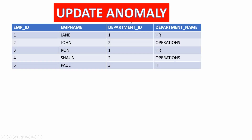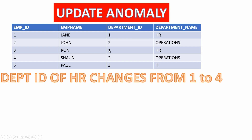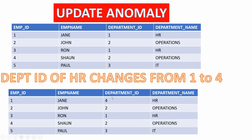Let's talk about update anomaly. Jane and Ron share the same department ID 1 and work in the HR department. For some reason the department ID of HR department is updated from 1 to 4. The update happens successfully for Jane but not for Ron. Now we cannot clearly identify if HR has department number 1 or 4. This is referred to as update anomaly.